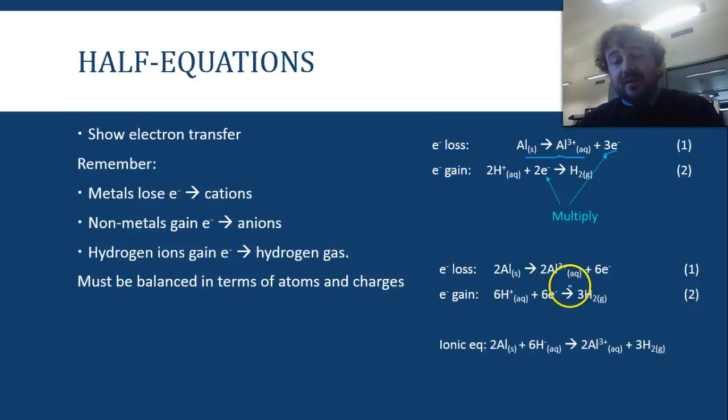So, it's two aluminiums that lose the electrons. So, it loses six electrons altogether. In this case, six hydrogens gain six electrons and give us hydrogen gas. We put them together, and it's two aluminium plus six H+ gives us two aluminium 3+ plus three H2 molecules. And that's it.